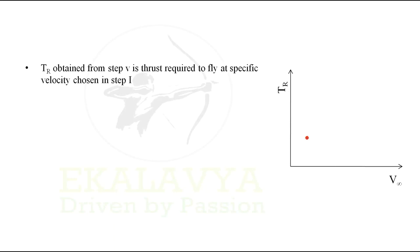The thrust required TR obtained from step 5 is the thrust required to fly at a specific velocity chosen in step 1. In similar manner, for various velocities the thrust required are obtained.